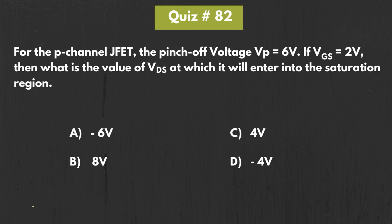In this question, we have been given this p-channel JFET and we have been given the pinch-off voltage for the given JFET. We have been asked to find the minimum value of the Vds such that the JFET enters into the saturation region whenever Vgs is equal to 2V.